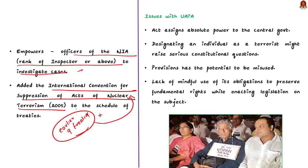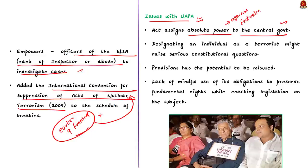These amendments are not without issues. The first issue is that the act assigns absolute power to the central government — if the central government sees an activity as unlawful, it may declare it so in its official gazette. This affects the power relation between the central and state governments, in turn affecting the federal structure mentioned in the basic structure of the constitution.